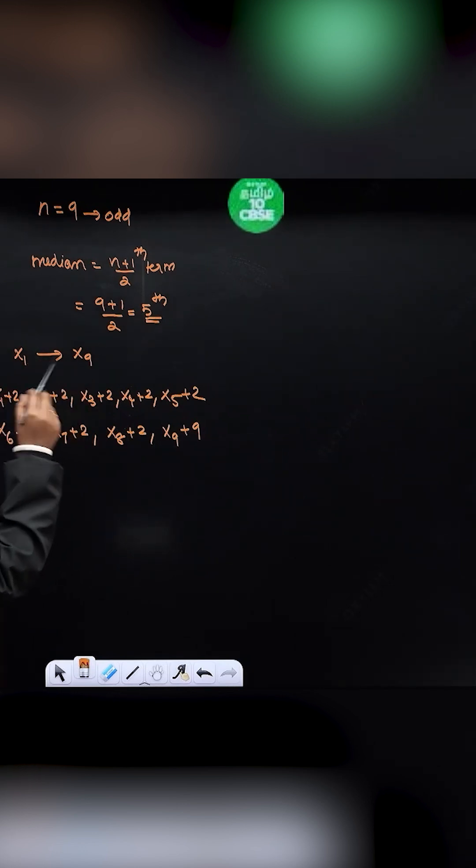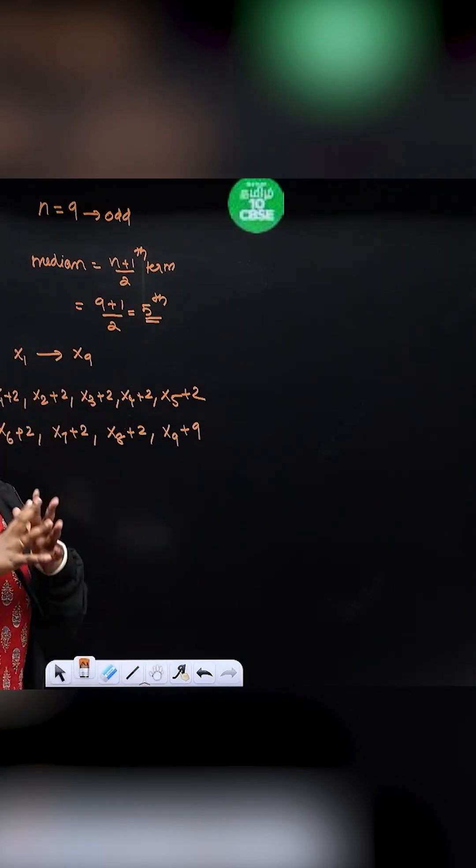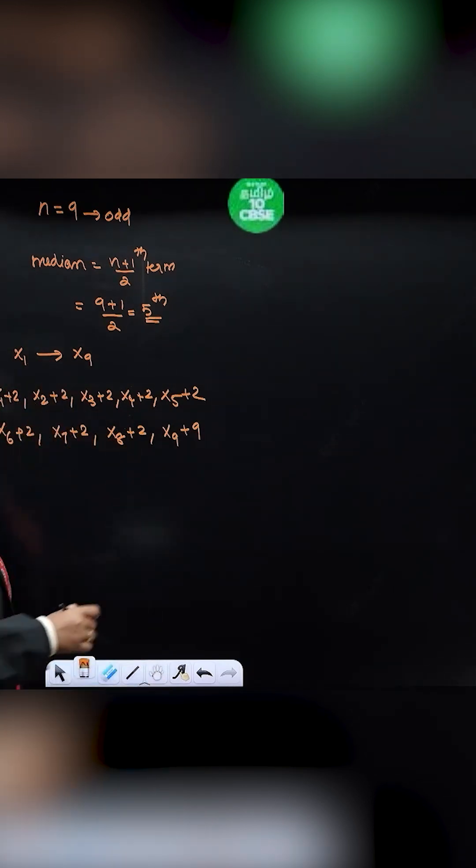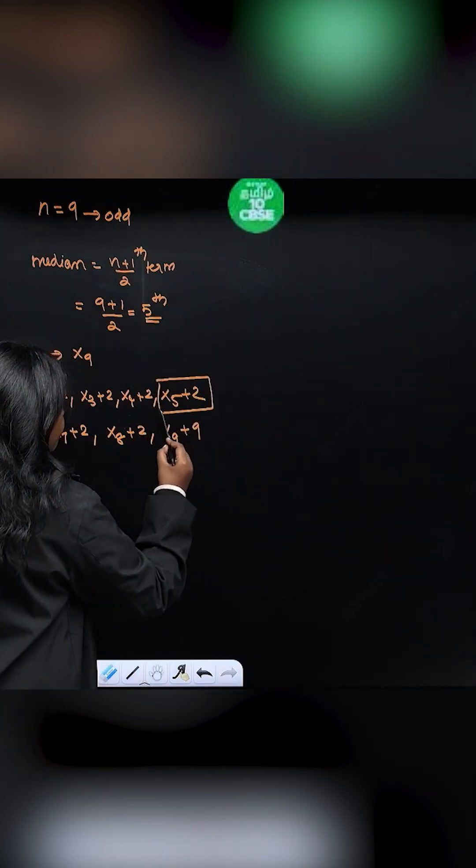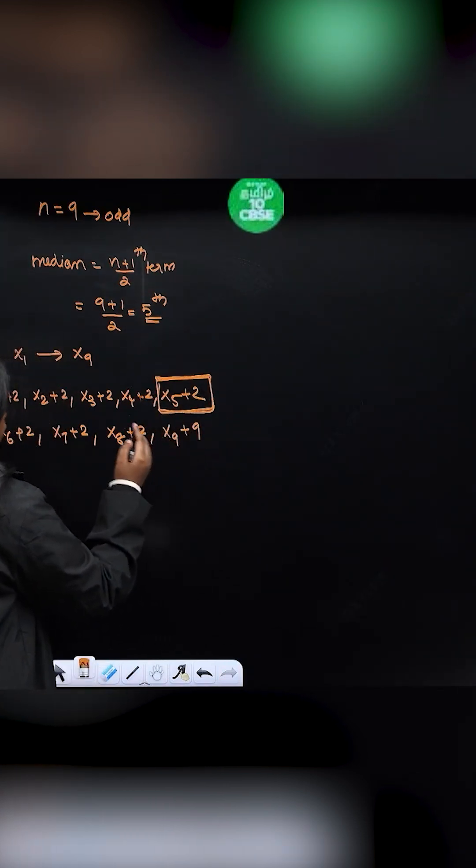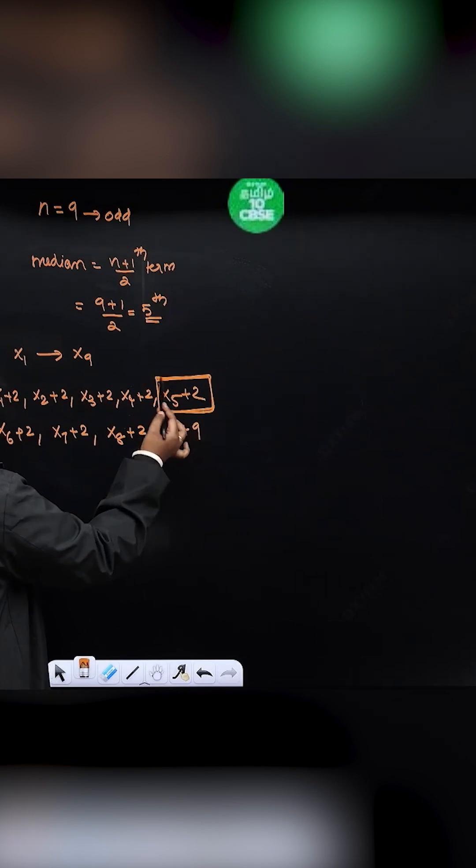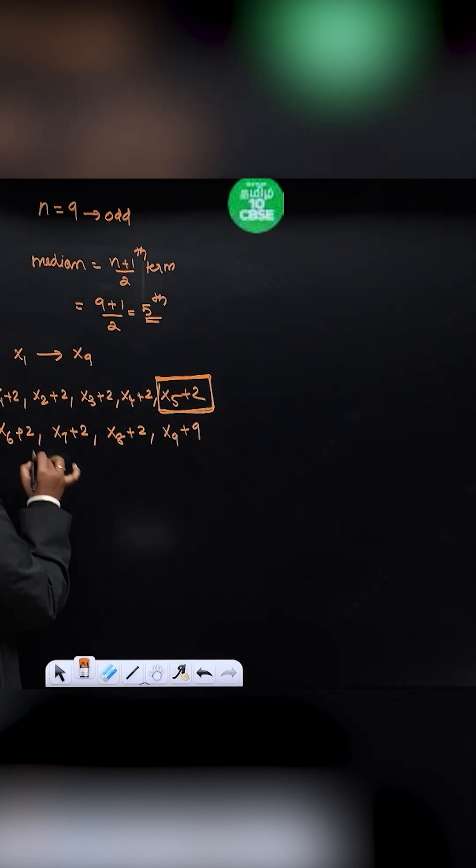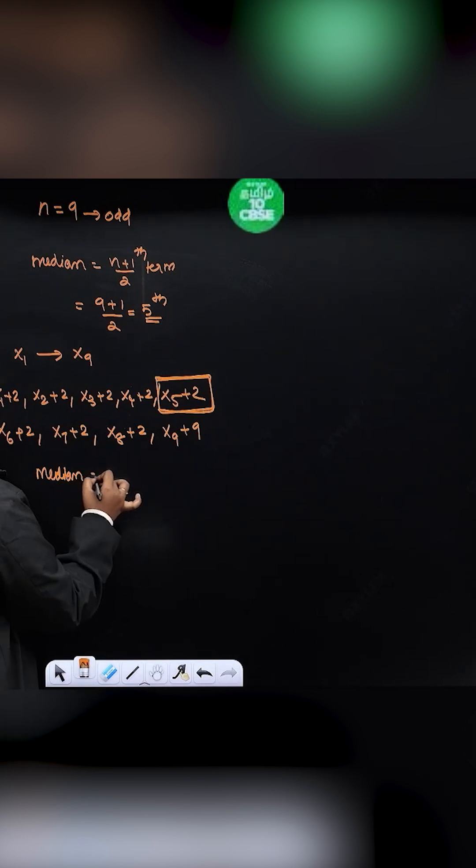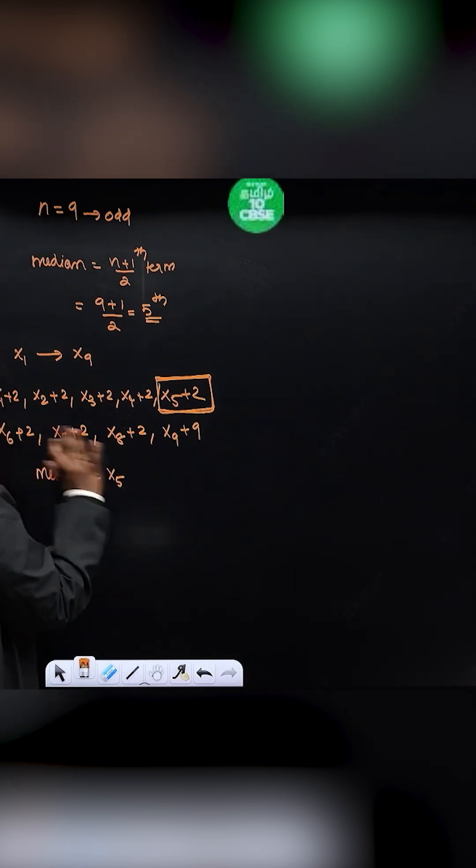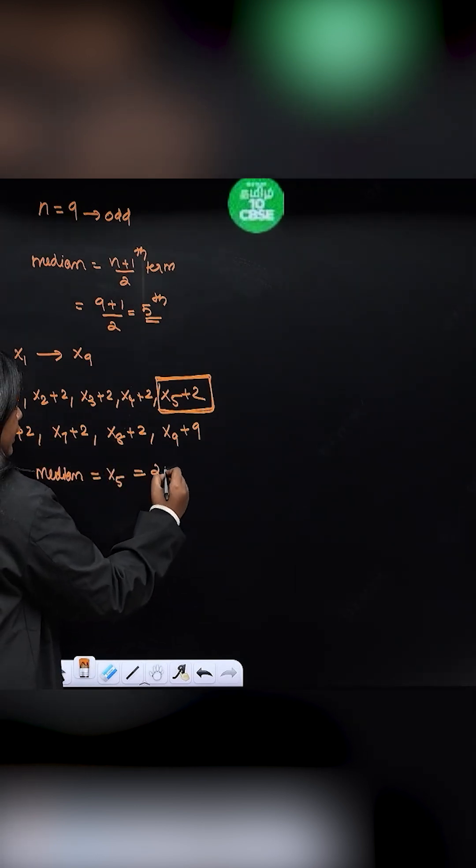So these are the observations. So my median, since when you increase, median is always the 5th term. The 5th term is the median of this observation. You already have the median, median is already given. That is x5, 5th term, which is 20.5.